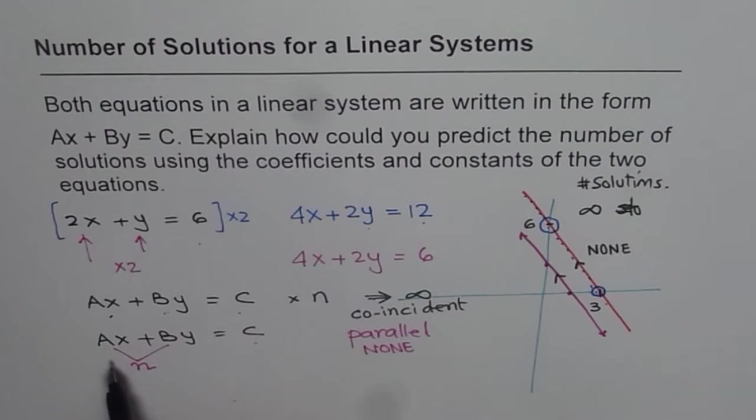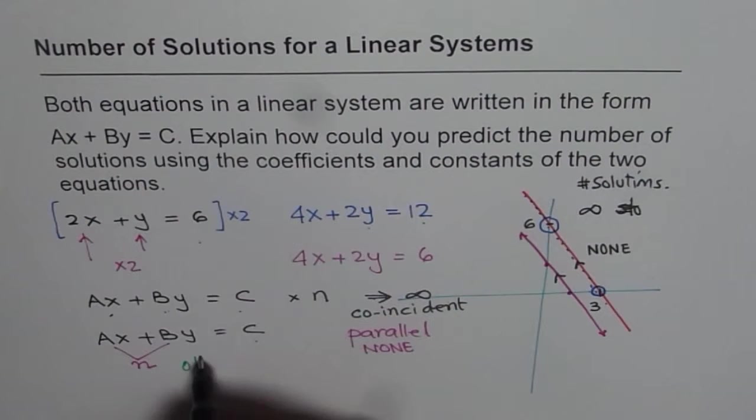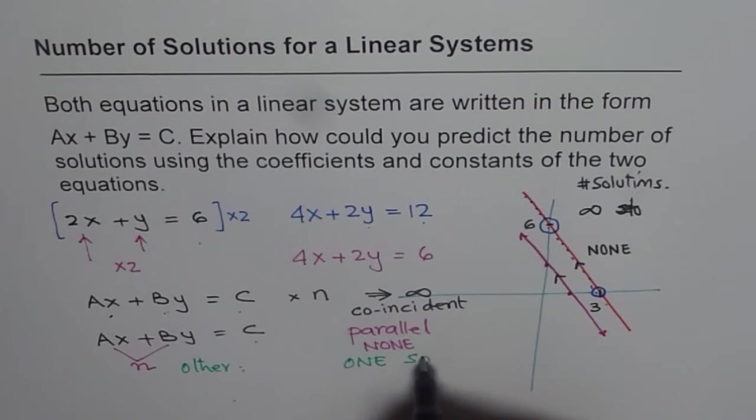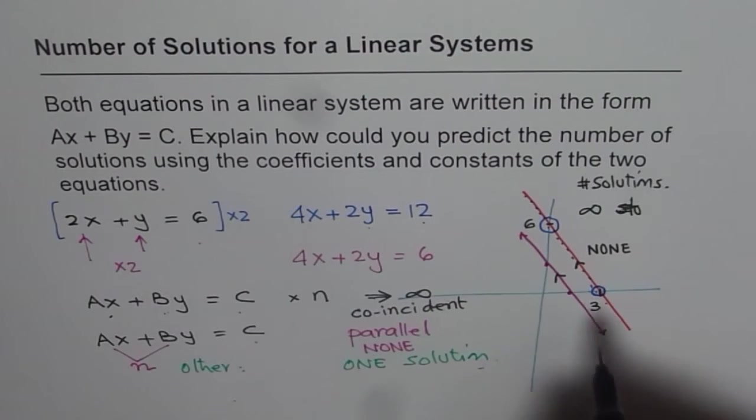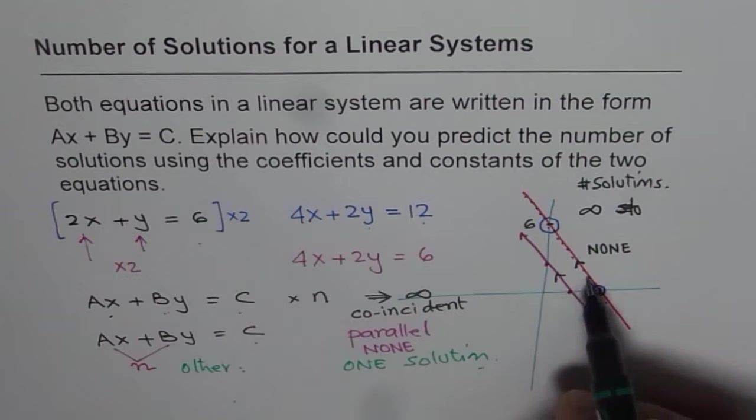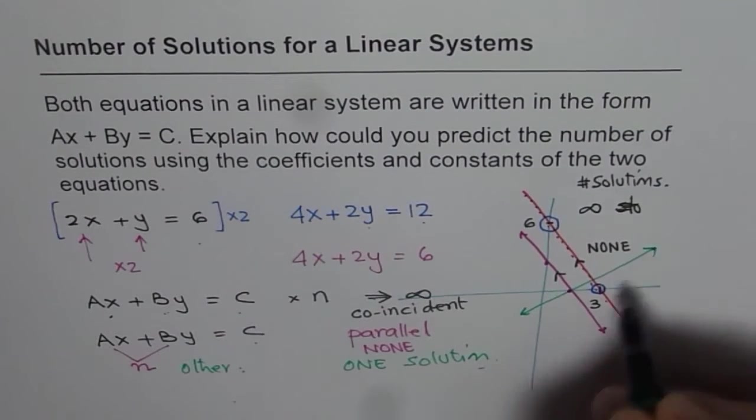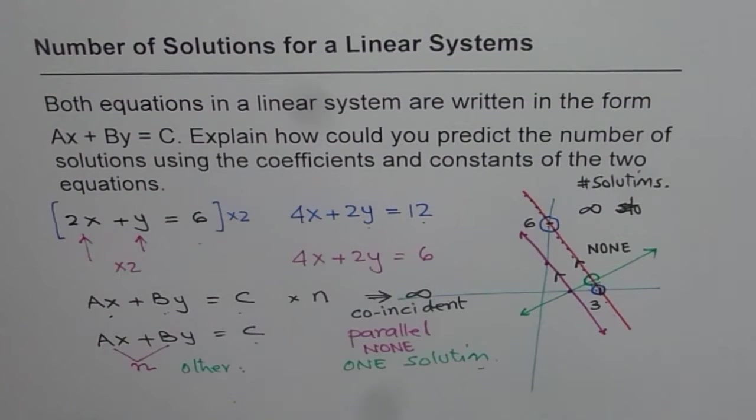And if we do not do that, but if you multiply A, B, and C by different numbers, all other cases, except for these two cases, what do you expect? For other cases, right, all other cases, we have one solution, correct? Since then, the lines will not be parallel, they will not be coincident, so they may just cross at any point, right? So they will intersect at only one point, right? So that is kind of important to understand.